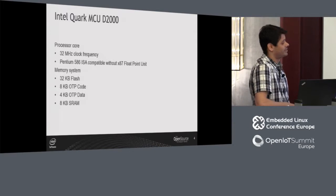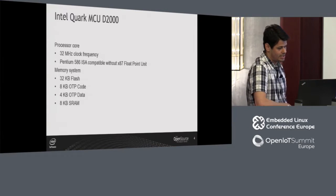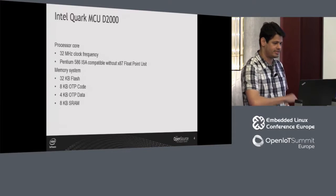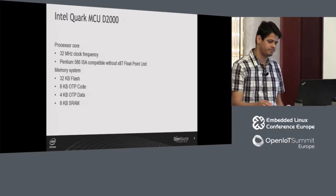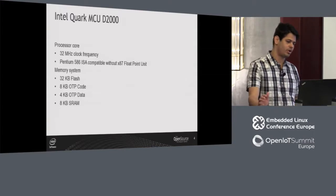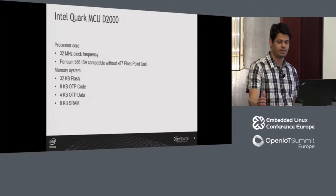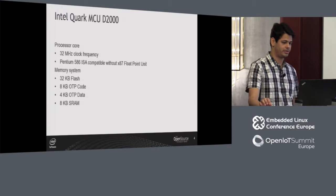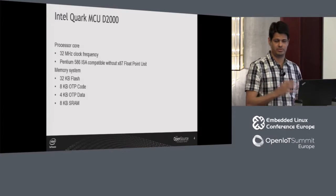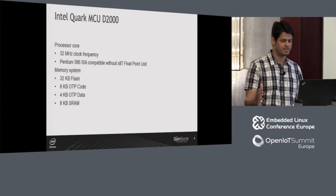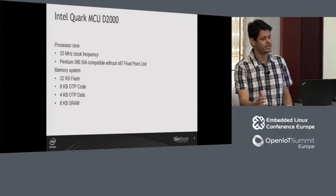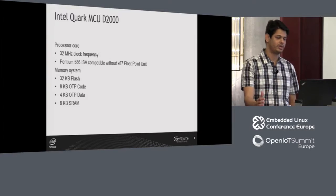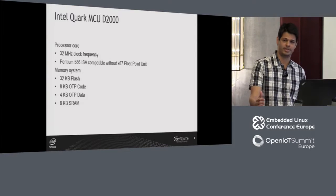The first platform is the Intel Quark MCU D2000. The core processor runs at 32 MHz clock frequency. The instruction set is basically the same as the Pentium 586, but there's no floating-point support.